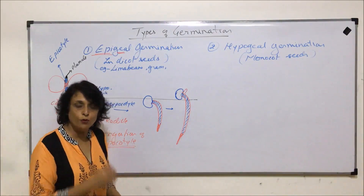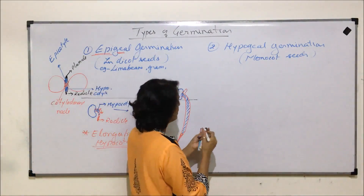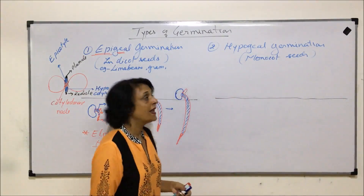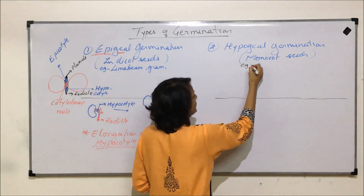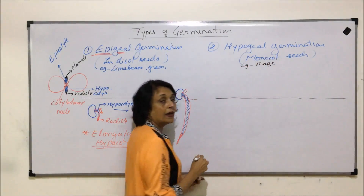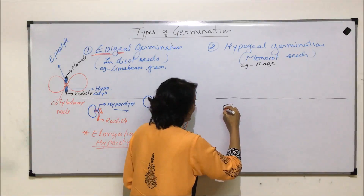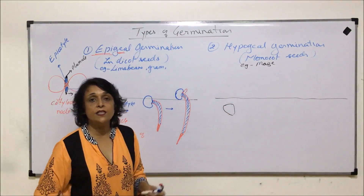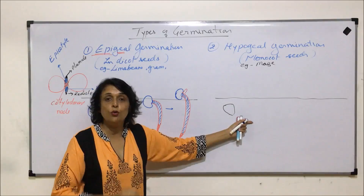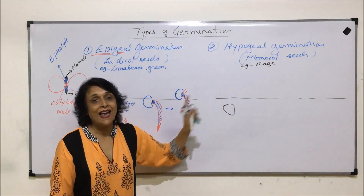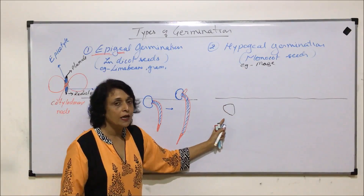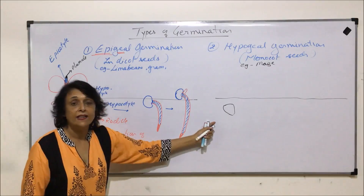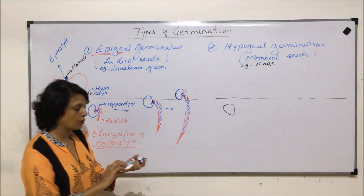Now let us talk about hypogeal germination, which is again a characteristic feature of monocots. Again, this is the soil surface. In monocots, we can take the example of maize. So when we sow a maize grain, the elongation takes place — this growth takes place — due to elongation of plumule and radicle. This is monocot, so there is a slight difference. We don't have plumule and radicle directly; instead, the structures are known as coleoptile and coleorhiza.